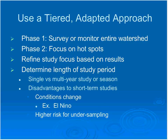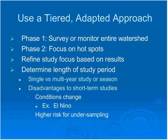Now let's talk about study approach. Most people have found that using a tiered, adapted approach works best — doing the study in phases. In phase one, you might do an extensive survey and monitor the entire watershed, or focus on areas of concern if you've been doing routine monitoring. It depends on how much information you have. You may want to do some sampling between a potential source and the discharge point. Phase two would involve more intensified studies in areas of concern identified during phase one.